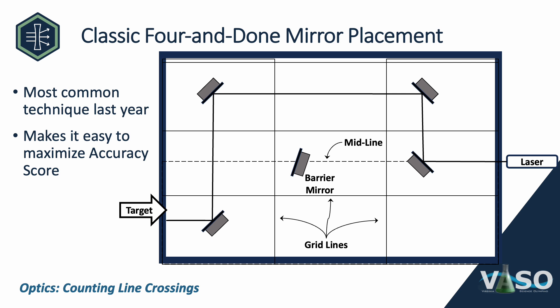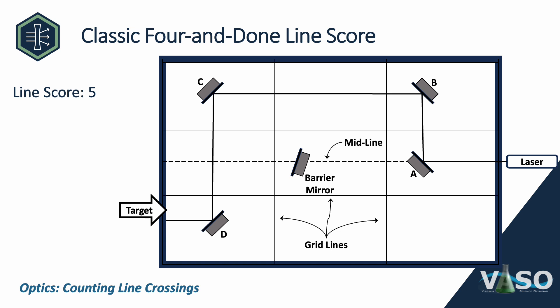I'm going to start with a very common configuration that competitors used last year, which a lot of event supervisors call the 'four and done' mirror placement. It was far and away the most common seen last year across multiple states, largely because it makes it easy to maximize your accuracy score while scoring most of the score for number of mirrors used. The four student-placed mirrors are labeled A, B, C, and D, and I'm going to start at the laser and trace the laser beam through, counting up the score piece by piece.